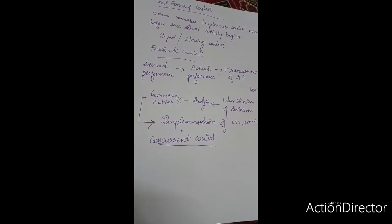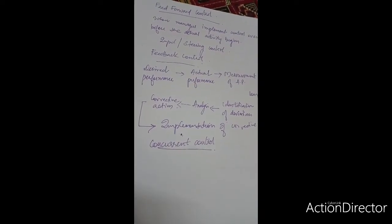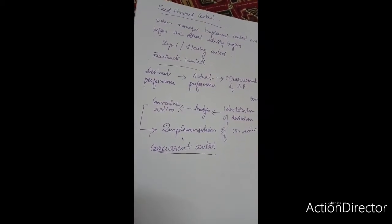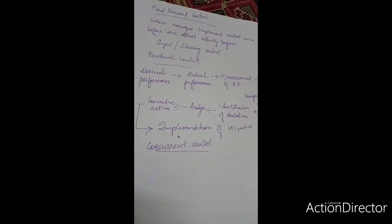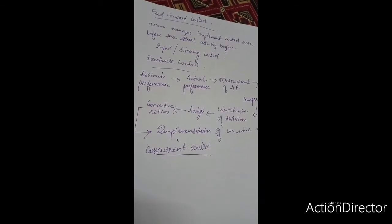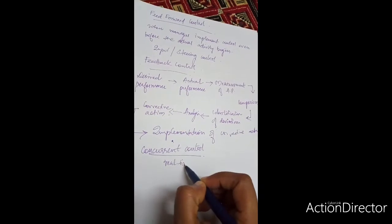Third one is concurrent controls. Concurrent control is exercised when the work activity is in progress. That is, in between, if we need to make any changes in our plan, then we can give a concurrent control process. It is called real-time control or process control, real-time because it happens in real-time.